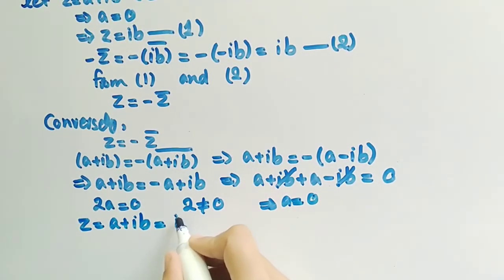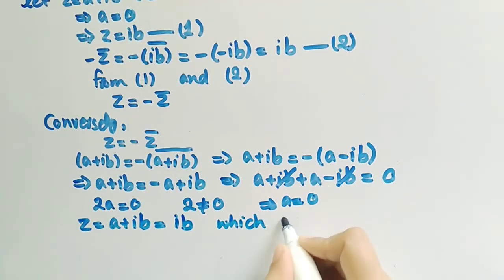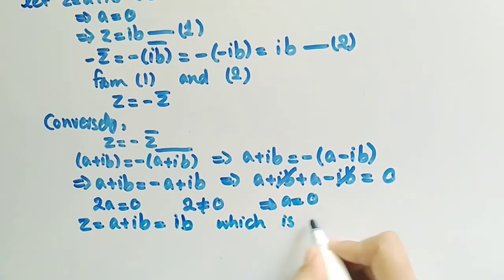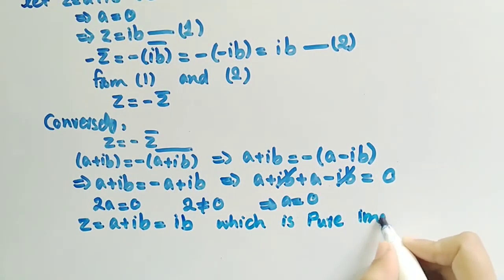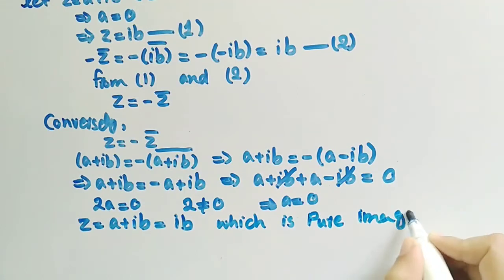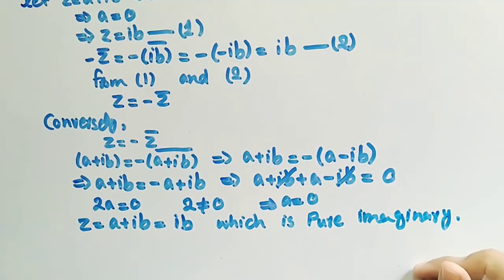Z equals iB, which is pure imaginary. Hence the proof is completed. We have proved that Z is pure imaginary if and only if Z is equal to minus Z conjugate.